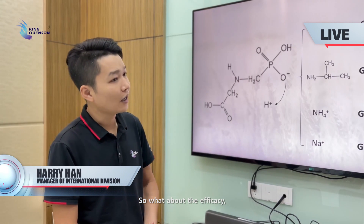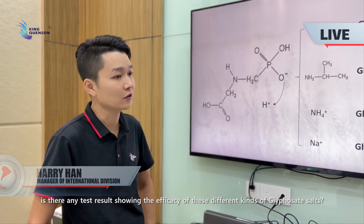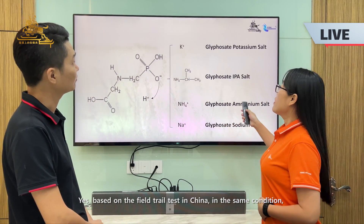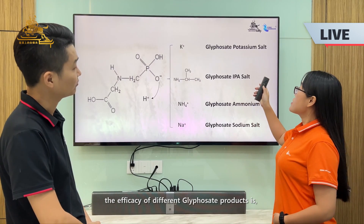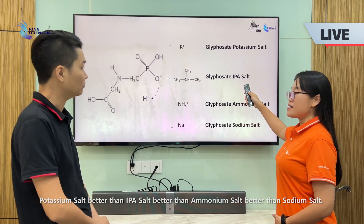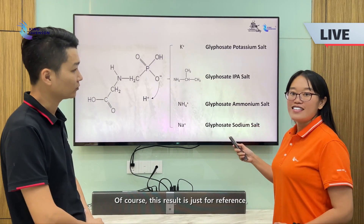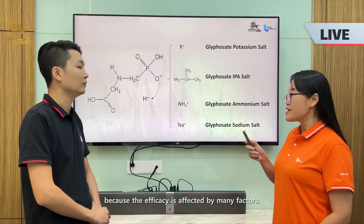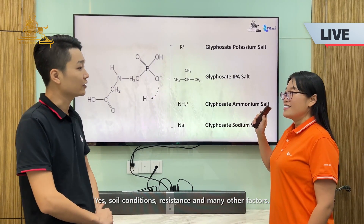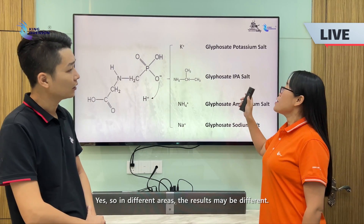So what about the efficacy? Is there any test data showing the efficacy of these different kinds of glyphosate salts? Yes. Based on field trial tests in China under the same conditions, the efficacy ranking of different glyphosate products is: potassium salts better than IPA salts, better than ammonium salts, and better than sodium salts. Of course, this is just for reference because efficacy is affected by many factors such as soil conditions, weed resistance, and other variables. So in different areas, the results may be different.